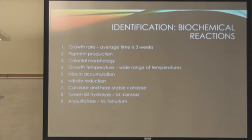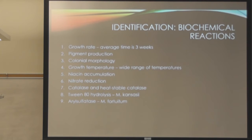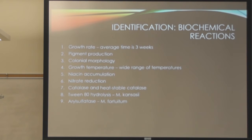This is a brief summary of the traditional biochemical techniques. They don't necessarily do a lot of these anymore — they usually use commercial tests instead — but you still need to know these categories. Growth rate on average is about 3 weeks, though it's usually longer, closer to 8 to 10. For pigment production, they look at color, but also colony size, elevation, and density — morphology and pigment production.